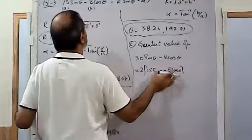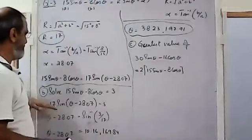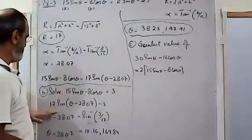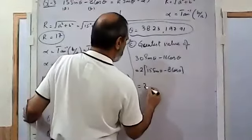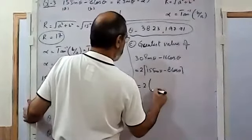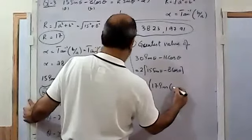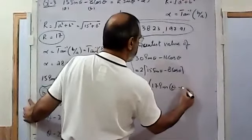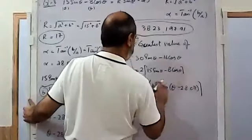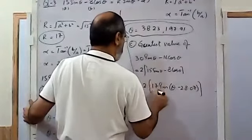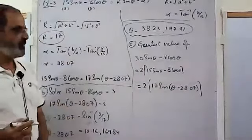This expression inside the brackets is the same as the one we already converted. In the required r·sin(θ - α) form, it is 17·sin(θ - 28.07°), so the full expression becomes 2 × 17·sin(θ - 28.07°).